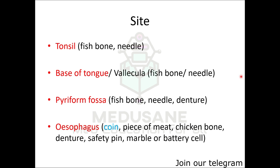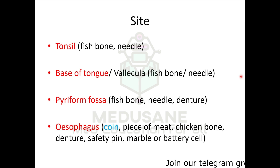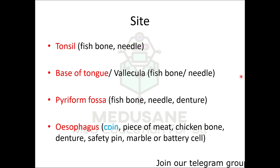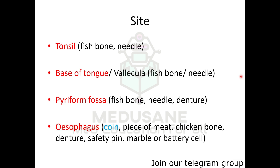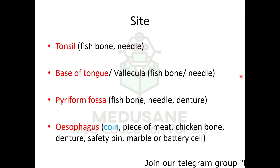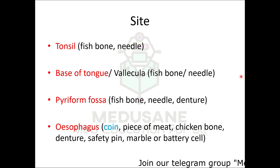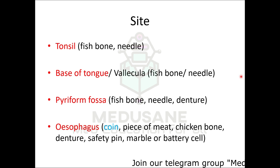Moving further down, a foreign body can lodge in the pyriform fossa. It can be a fish bone, needle, or generally a denture. If the patient is adult and cooperative, a foreign body from the pyriform fossa can be removed with a curved forcep and local anesthetic spray. However, if the patient is not cooperative or is a child, then general anesthesia is required.